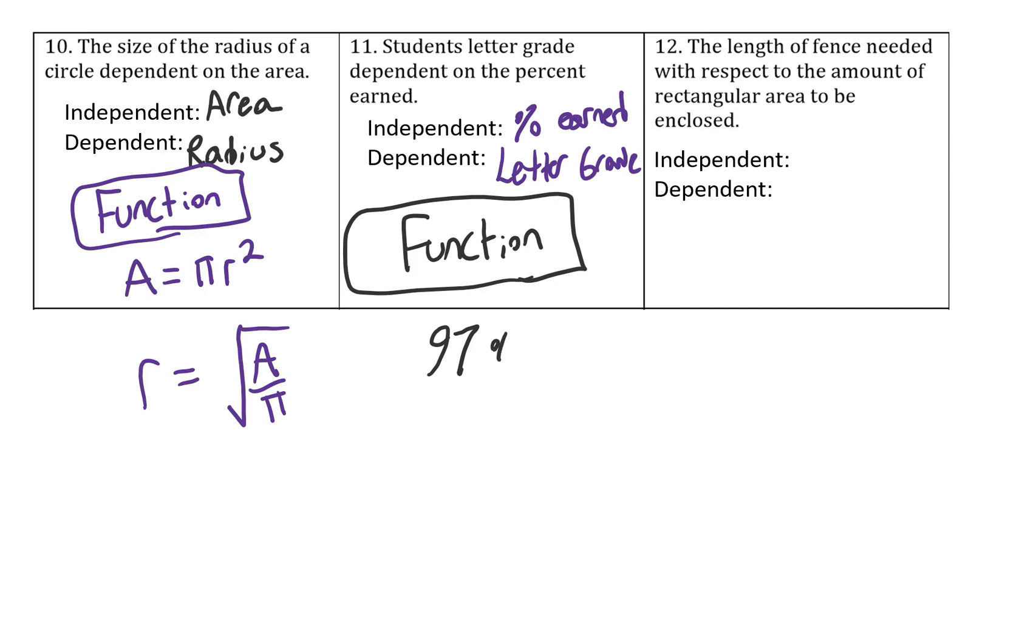For example, 97% goes to an A, 91% goes to an A. It's okay that they both go to A. Each X, each independent, is going to one dependent, one letter grade. A 73 is going to a C. So it is a function.